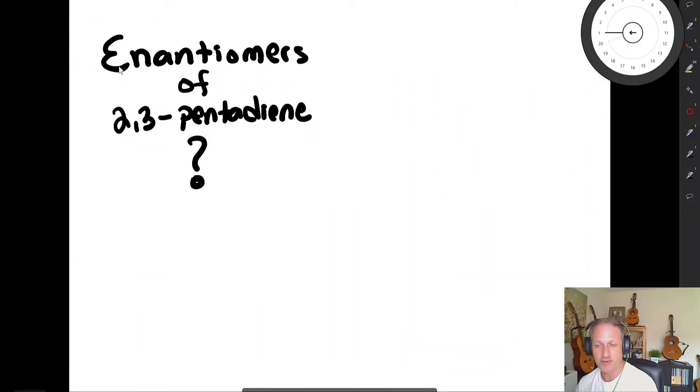Let's take a minute and talk about enantiomers of 2,3-pentadiene. Now this one's a little bit tricky, but 2,3-pentadiene has five carbons. So you have a carbon, carbon, carbon, carbon, carbon.